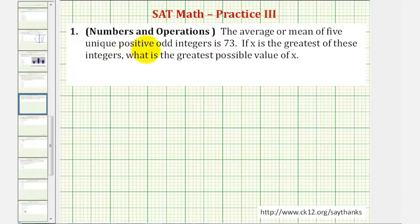One of the unique positive odd integers is x, where we want x to be as large as possible. So if we want x to be as large as possible, then the other four unique positive odd integers must be as small as possible.